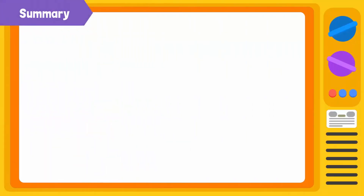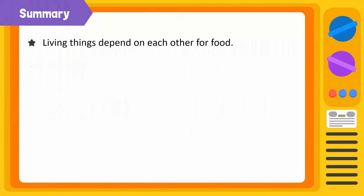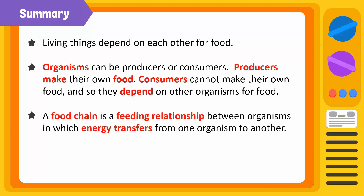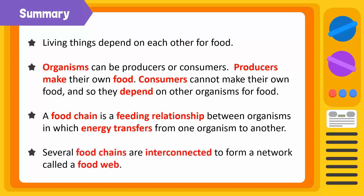Time to summarize! Living things depend on each other for food. Organisms can be producers or consumers. Producers make their own food, while consumers cannot make their own food, and so they depend on another organism for food. A food chain is a feeding relationship between organisms in which energy transfers from one organism to another. Several food chains interconnected to form a network is called a food web.